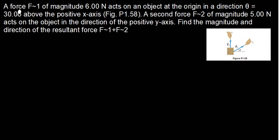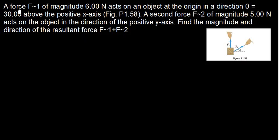Let's now talk about vectors. The question says a force F1 of magnitude 6.00N acts on an object at the origin in a direction of 30 degrees above the positive x-axis. A second force F2 of magnitude 5N acts on an object in the direction of the positive x-axis. Find the magnitude and direction of the resultant force, which is F1 plus F2. So F1 plus F2 is the same as the resultant.